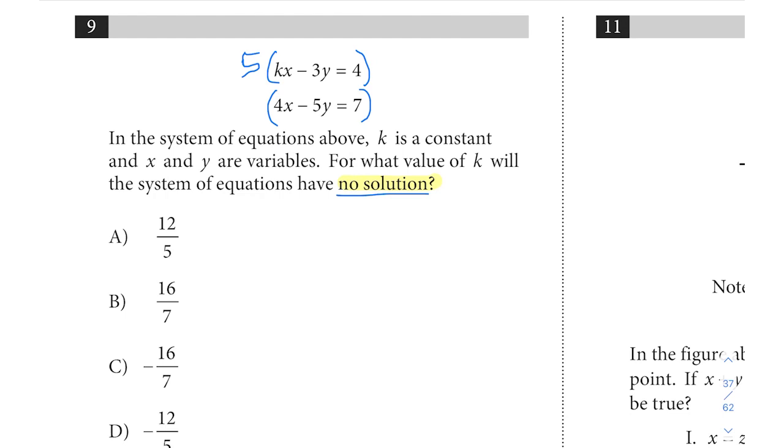We also want to track the positive and negative aspects so that they'll cancel. Let's multiply the top one by five and see what we get. So that is going to be 5kx minus 15y equals 20. Like we always say, please make sure you distribute to every term including the constant on the right side of the equal sign.